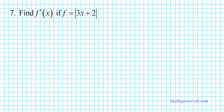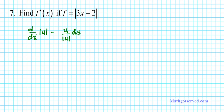Let's take a look at question number seven. We are to find f prime if f is the absolute value of 3x plus 2. There are two possible solutions you can have for the derivative of this function. The first one uses the differentiation rule: d/dx of the absolute value of u equals u over the absolute value of u, times du/dx. This is one possible way of finding the derivative of this function.